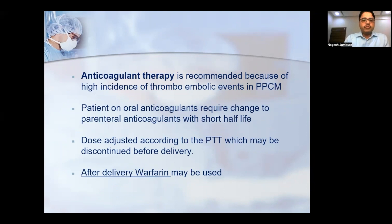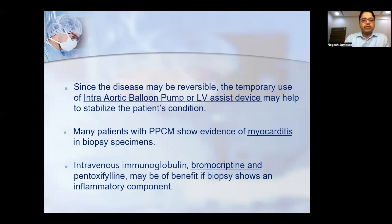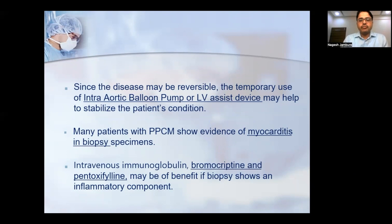These patients are prone to mural thrombosis due to low ejection fraction, creating high risk of thromboembolic events. Anticoagulant therapy is required — heparin during pregnancy and warfarin after delivery. Since the disease may be reversible, temporary intra-aortic balloon pump or LV assist device as non-pharmacological therapy can be used. If biopsy shows inflammatory components, bromocriptine and pentoxifylline can be given for refractory cardiac failure.